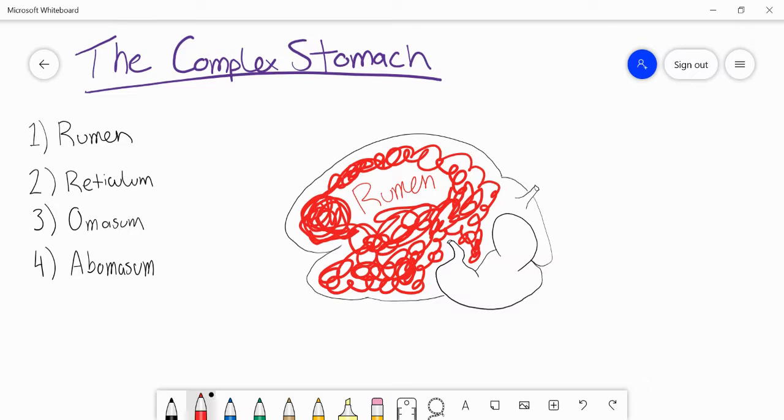And the other function of the rumen is it's really this giant sack of bacteria that's sitting there working with the animal in a symbiotic relationship to digest these really difficult or indigestible foods that they're eating. So the grass that we see, the straw, the hay, the silage, these are really inaccessible nutrients that the animals are relying on.